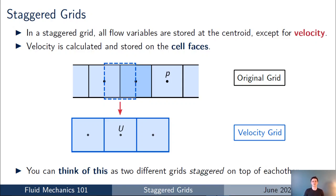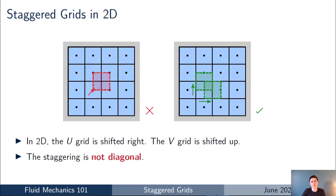Because the velocity is calculated and stored at the cell faces, you can think of this as a separate grid staggered on top of the original pressure grid. You can think of drawing a control volume around the face so that the face centre becomes the cell centroid of this new staggered grid. That all makes sense in 1D, but in 2D you need to be quite careful when thinking about this staggered grid.